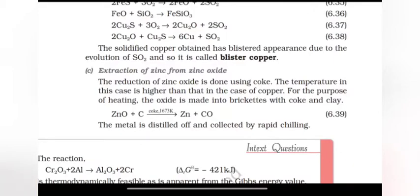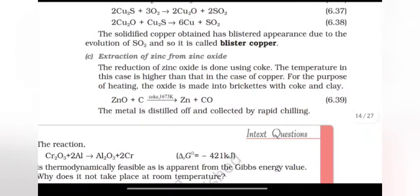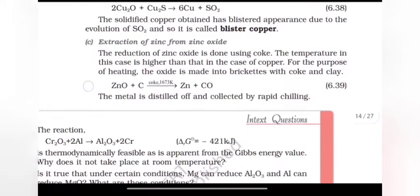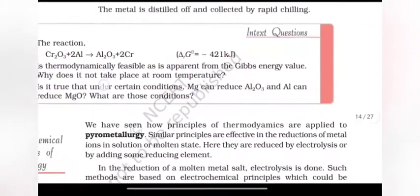Extraction of Zinc from Zinc Oxide. The reduction of zinc oxide is done using coke. The temperature in this case is higher than that in case of copper. For the purpose of heating, the oxide is made into brick crates with coke and clay. The metal is distilled off and collected by rapid chilling.